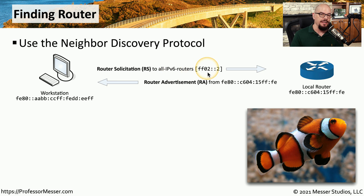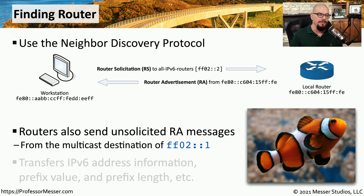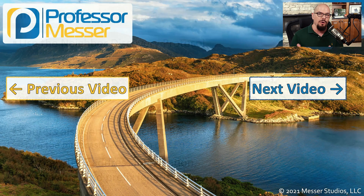A Router Solicitation message is sent to an IPv6 router multicast address, and any local routers on that subnet respond back with a Router Advertisement. Routers may also be configured to send unsolicited Router Advertisements over this multicast address, so all devices on the subnet can identify where the router is. This transfers information such as the router's IPv6 address, prefix information for the network, and prefix length, allowing local devices to automatically configure themselves with the appropriate IP addresses.